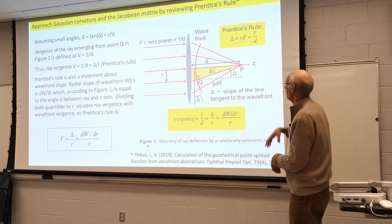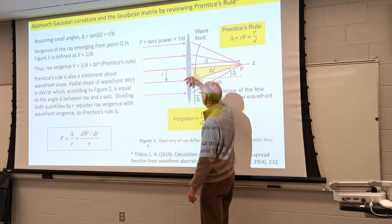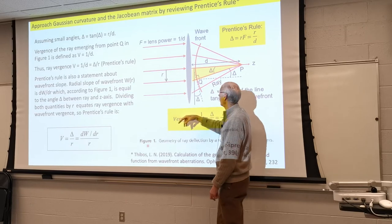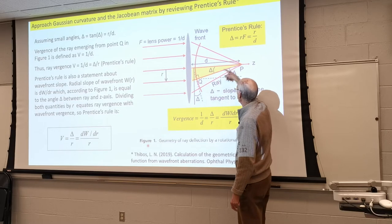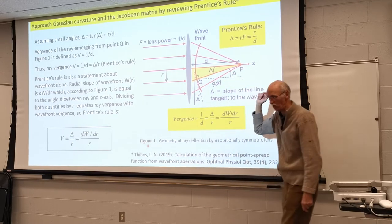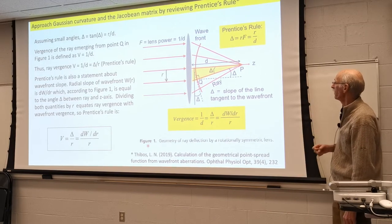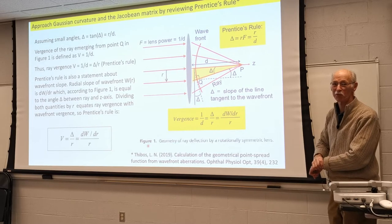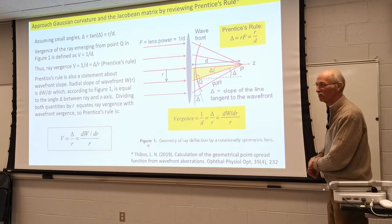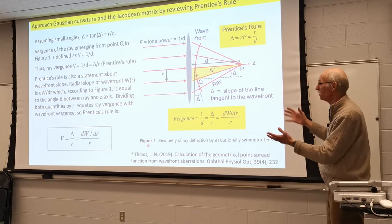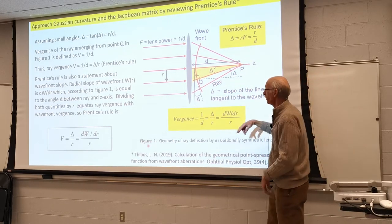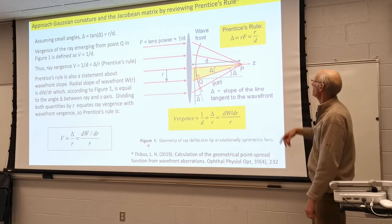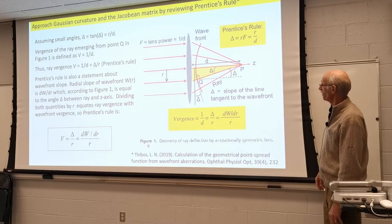Prentice's rule: if you have a lens and a ray comes in some distance away from the center of that lens, displaced by a distance R from the center, that ray is going to get bent. The refracted ray makes an angle delta with the chief ray axis. What Prentice proved — pretty simple result — is that this angle delta is simply the product of how far away you moved, R, and the power of the lens, F. So delta equals R times F.